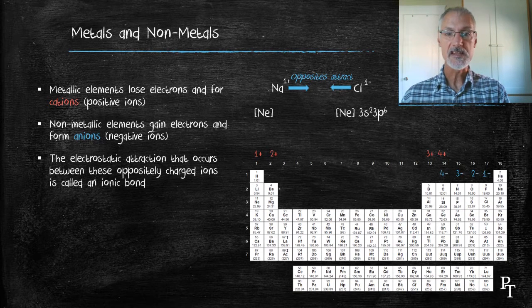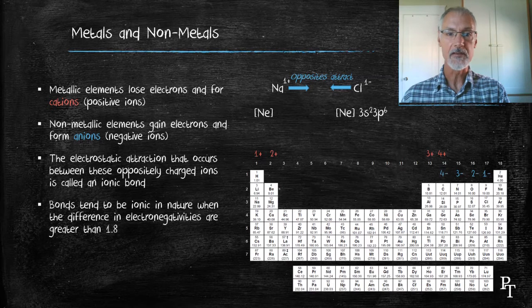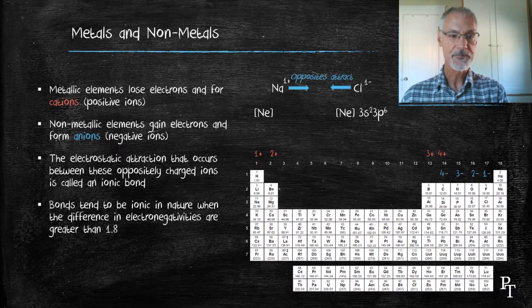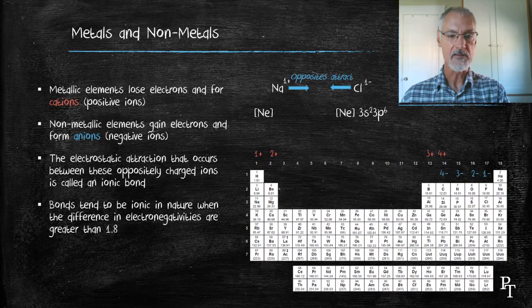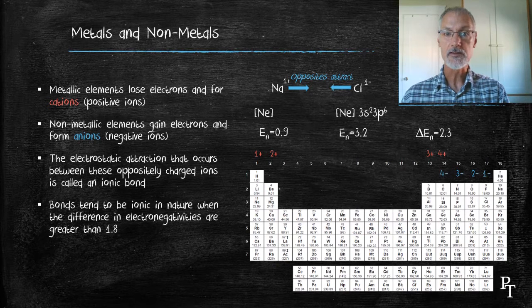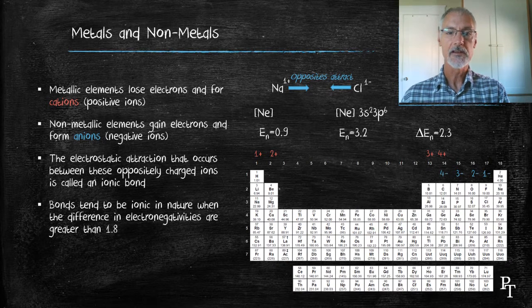Generally speaking, we tend to classify ionic bonds as substances that have differences of electronegativity greater than 1.8. In this case, I have the electronegativity of sodium as 0.9, chlorine 3.2, a difference of 2.3. And as a result, these tend to form bonds that are ionic in character.